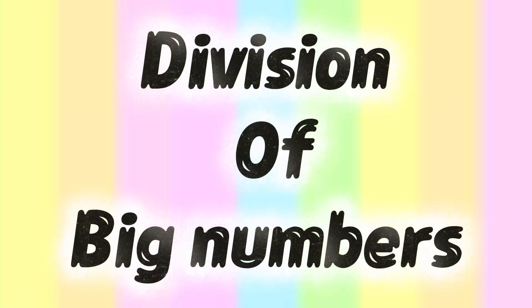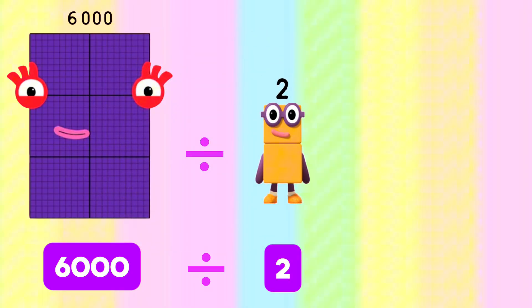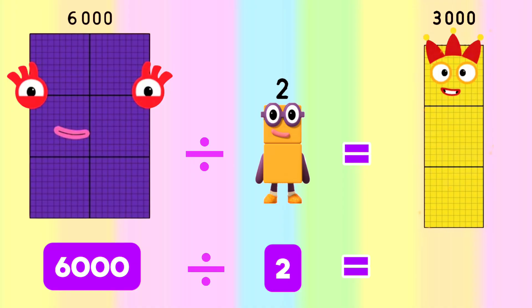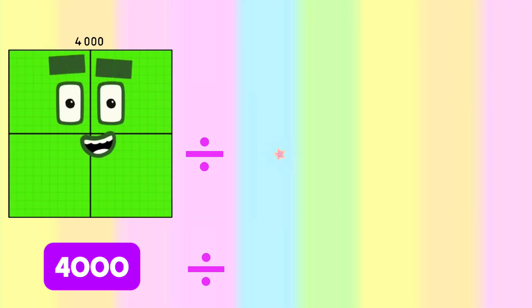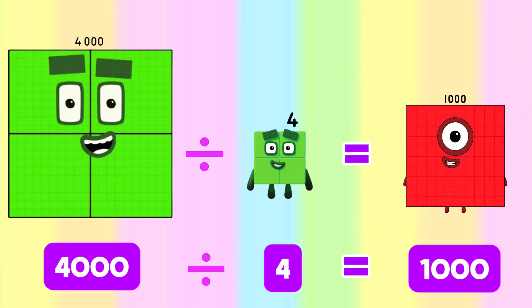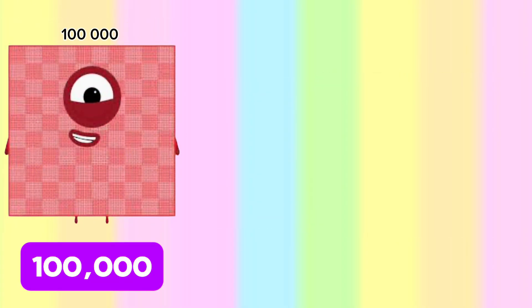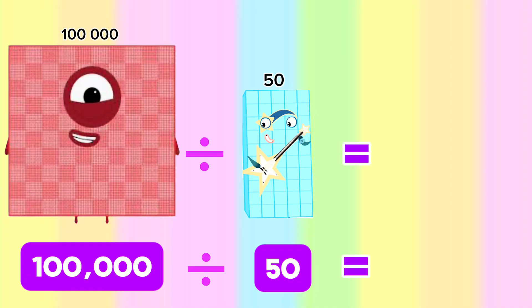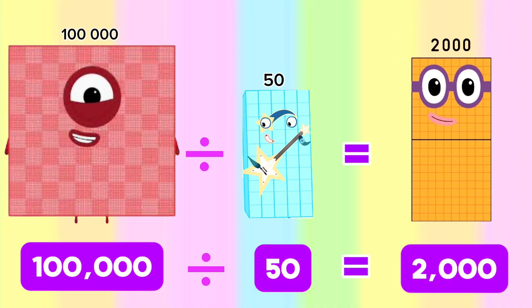Division of Big Numbers. 6,000 divided by 2 is equals to 3,000. 4,000 divided by 4 is equals to 1,000. 100,000 divided by 50 is equals to 2,000.